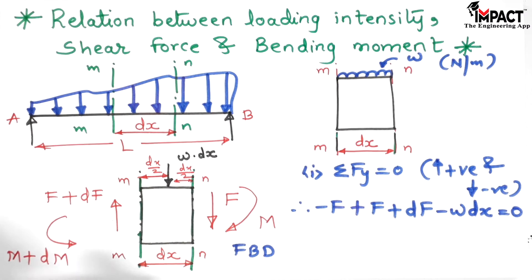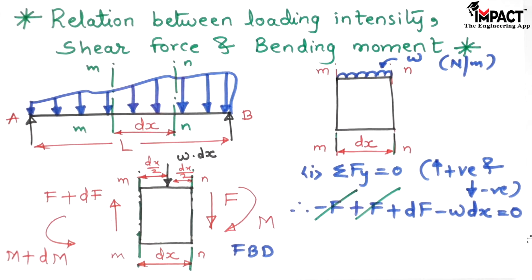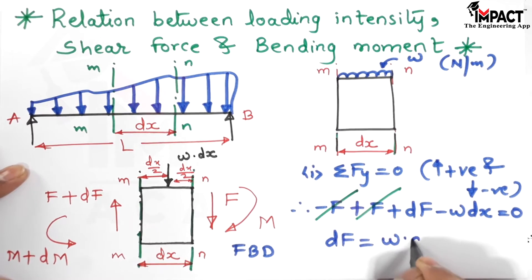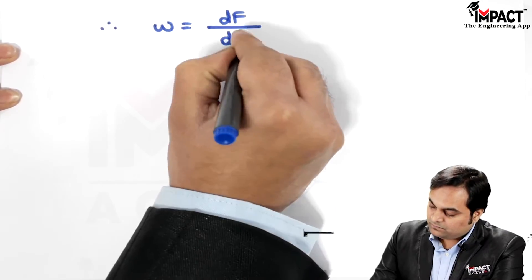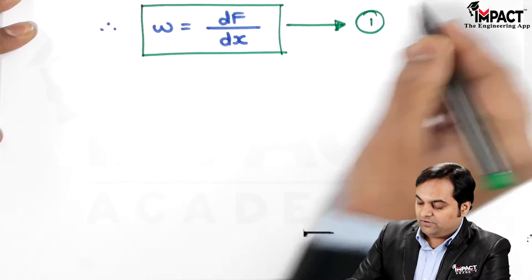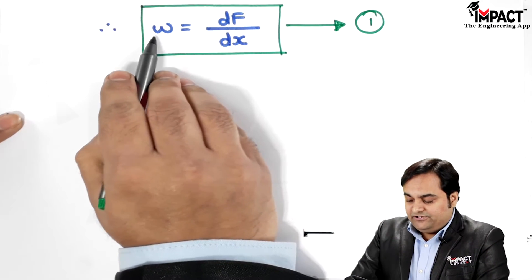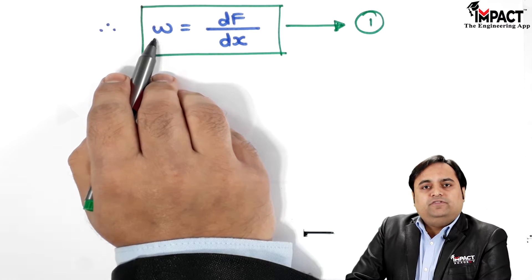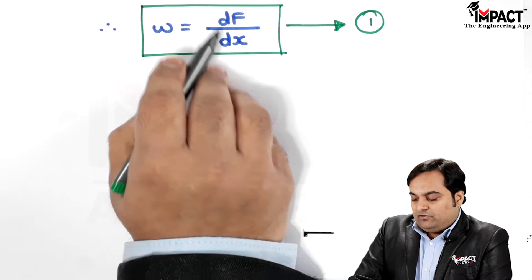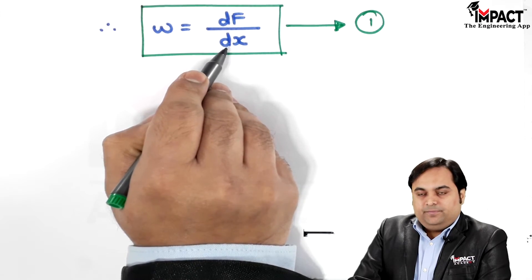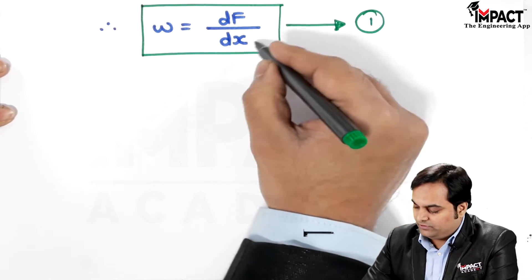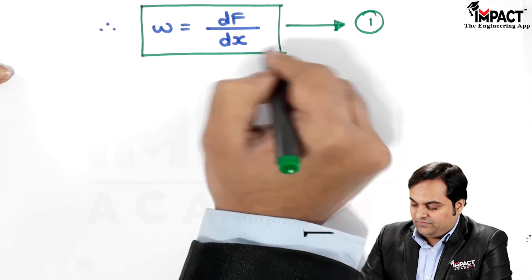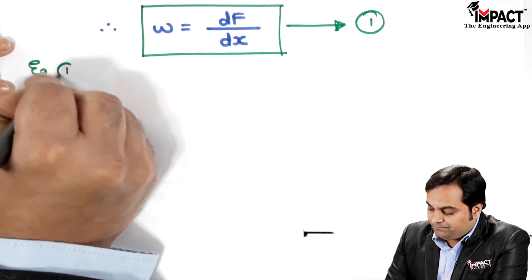From this equation, +F and −F cancel out, leaving dF = w·DX. Dividing both sides by DX gives dF/DX = w. This is Equation 1, which gives the relation between the rate of loading — the intensity w of the uniformly distributed load — and the shear force F. The unit of dF/DX is Newton per meter, which is indeed the unit of UDL intensity.